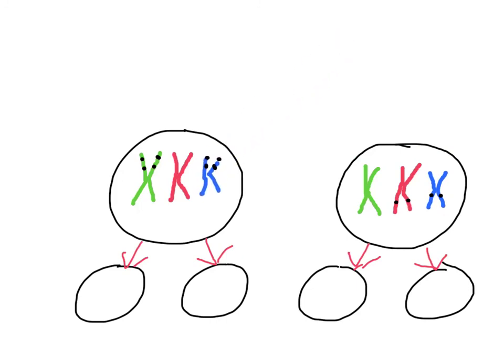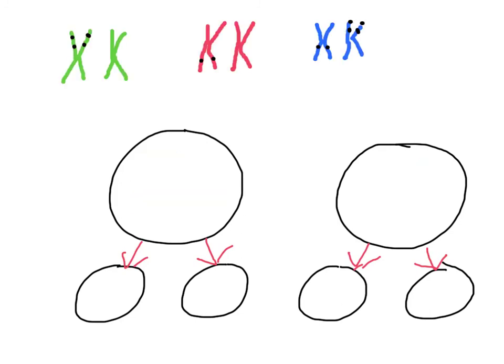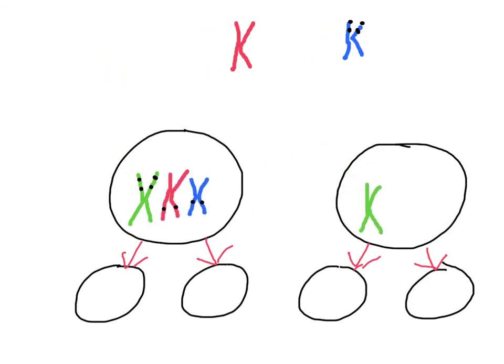So this means we can get lots of different combinations. We could go through and we could put all of the first ones there in the same cell. And you can imagine, with 23 different pairs in humans, there's lots and lots of different combinations that we can get. An amazing number of combinations we can get just from having 23 pairs of chromosomes. We could mix them up in a heap of different ways.